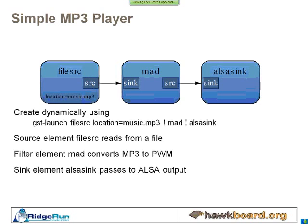I'm pulling the data from a file source. It has an element parameter called location, and we use the location to specify the file name and path. For instance, if we had a hard disk connected to the SATA interface on a Hawk board, we can pull the data off the hard disk using the file source. In this case, we're saying it's encoded as an MP3 music file. From the pipeline point of view, the source pad of the file source element gets connected to the sink pad of an element based on the MAD MP3 decoder.